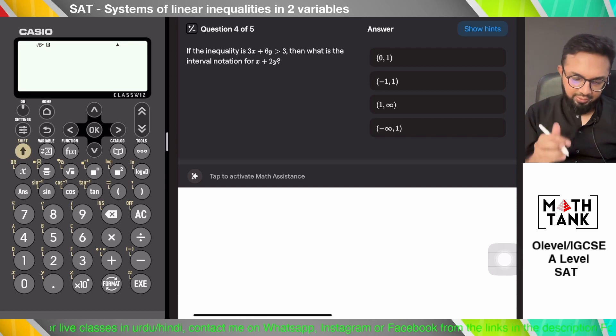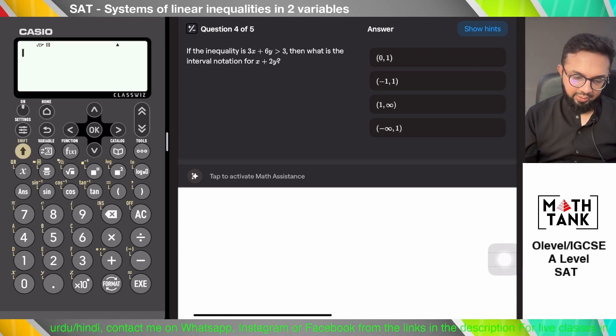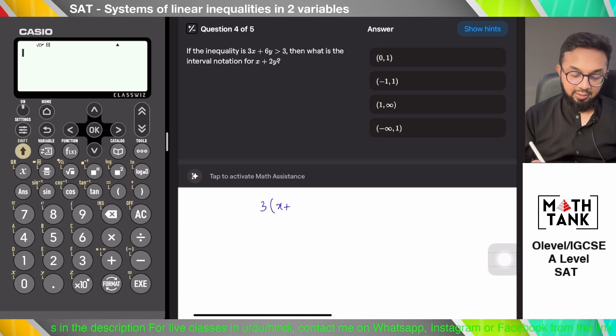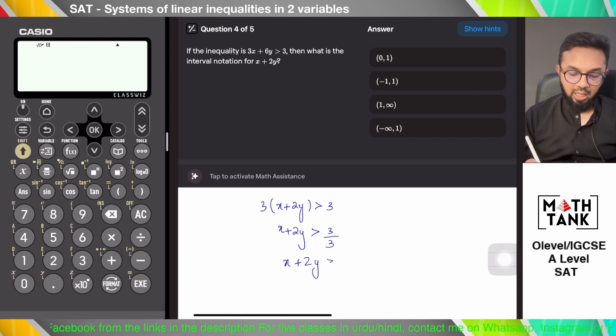If the inequality 3x plus 6y is greater than 3, then what is the interval notation for x plus 2y? So x plus 2y is just 3 factored out of 3x plus 6y. So x plus 2y is greater than 3 over 3.